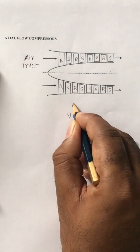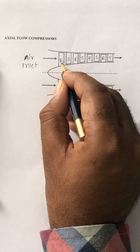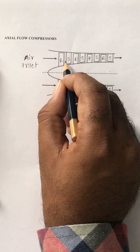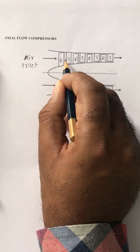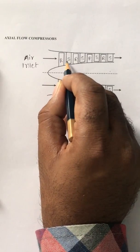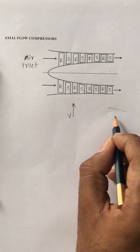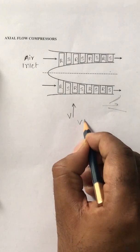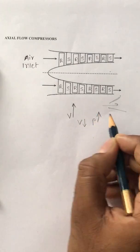After increment in velocity, it will go to the space provided between the rotor blades and stator blades, and it is something like a diffuser. It decreases velocity and it increases the pressure.